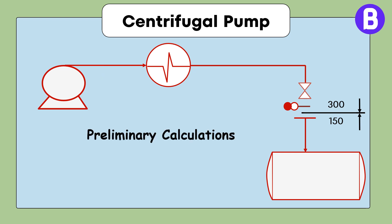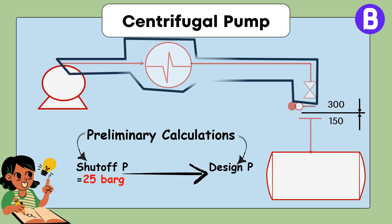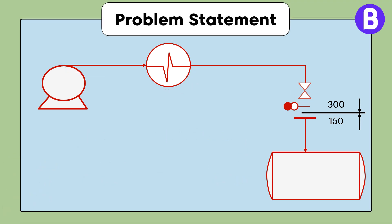Based on preliminary calculations, the pump shutoff pressure was considered with a 20% margin from the differential pressure, calculated to be 25 bar gauge. This led to a design pressure of the piping and instruments and heat exchanger in the discharge system to be 25 bar gauge.